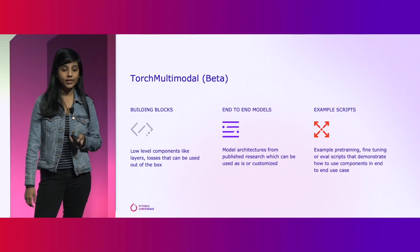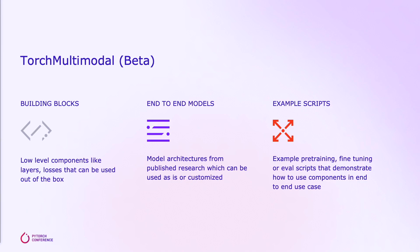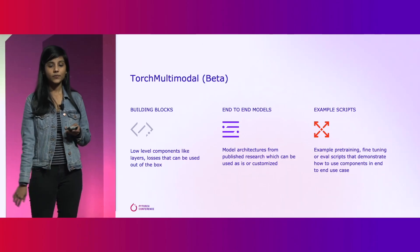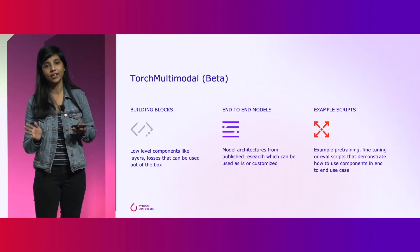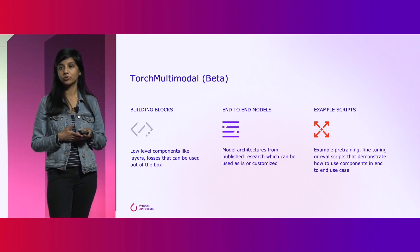Today, the key offerings from our library include common low-level building blocks — essentially Lego pieces that are useful if you want to build a model from scratch. Then we have state-of-the-art end-to-end models that you can import and instantiate for reproducing results from academia or for experimenting with your own use case. We also have a repository of example scripts as a starting point for researchers writing their own training pipeline, demonstrating techniques like multitask learning, zero-shot evaluation, and integration with other PyTorch distributed APIs.